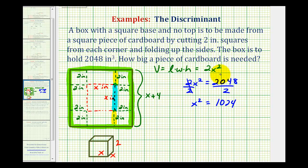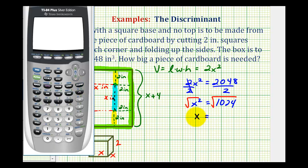And now to solve for x, we'll take the square root of both sides of the equation. Now because x represents a length, we only need the positive square root, or the principal square root here. So we'll have x equals the square root of 1,024.